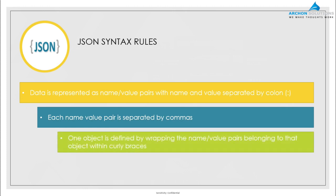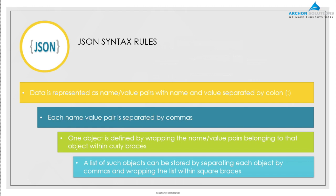Rule three: one object can have multiple name-value pairs. To signify that these name-value pairs belong to one object, we wrap them within curly braces.